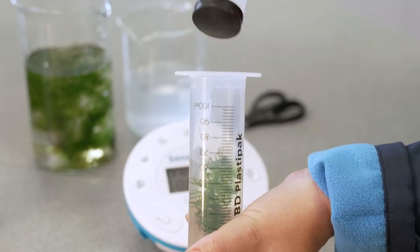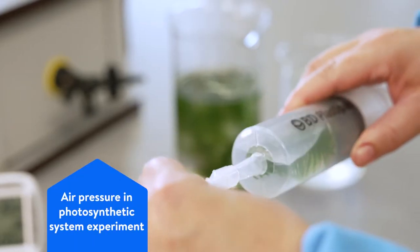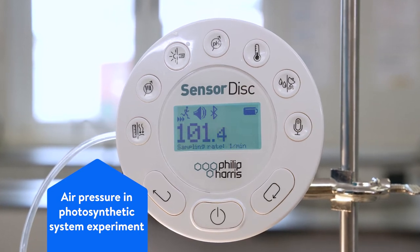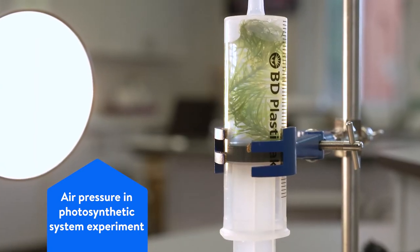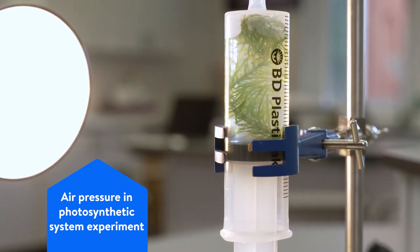Welcome to our video showing how to use a sensor disk data logger to measure the change in air pressure inside an active photosynthetic system and how this varies with light intensity.